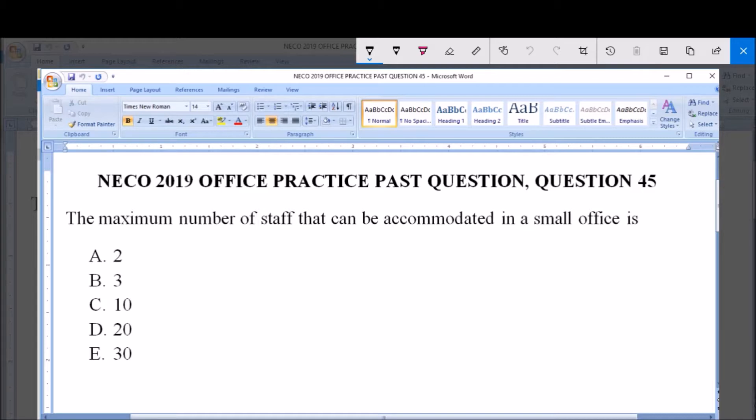The maximum number of staff that can be accommodated in a small office is A2, B3, C10, D20 and E30.